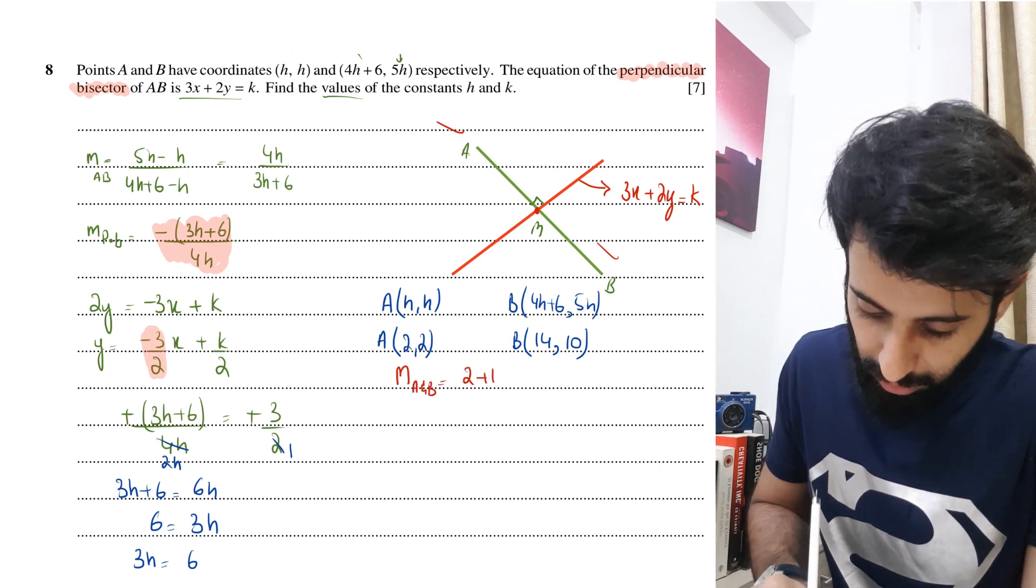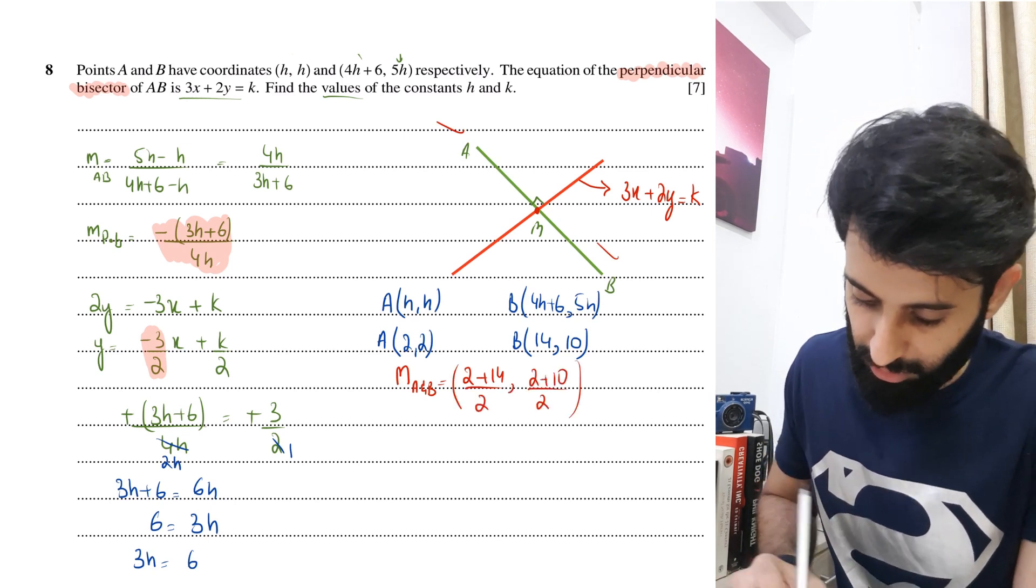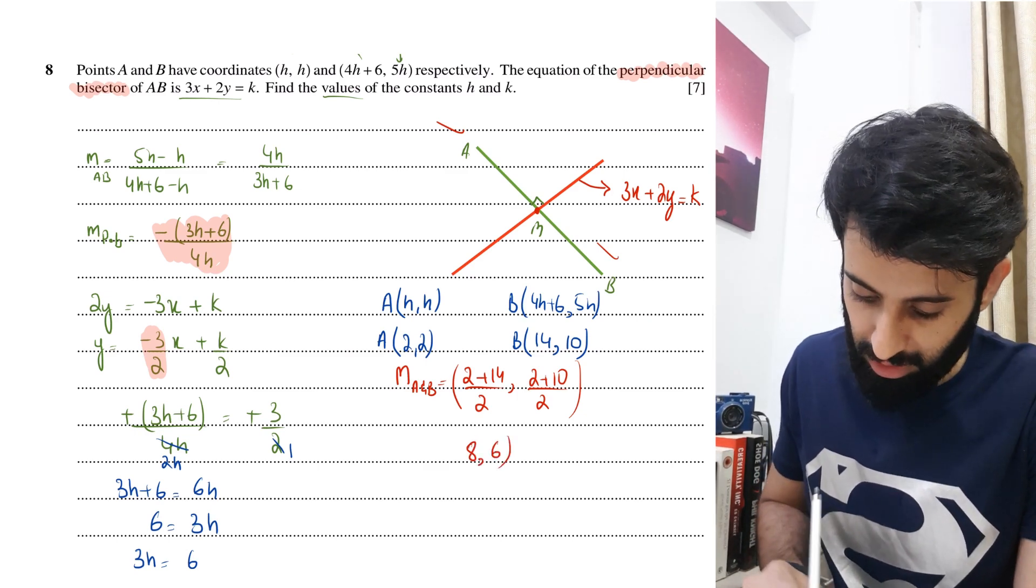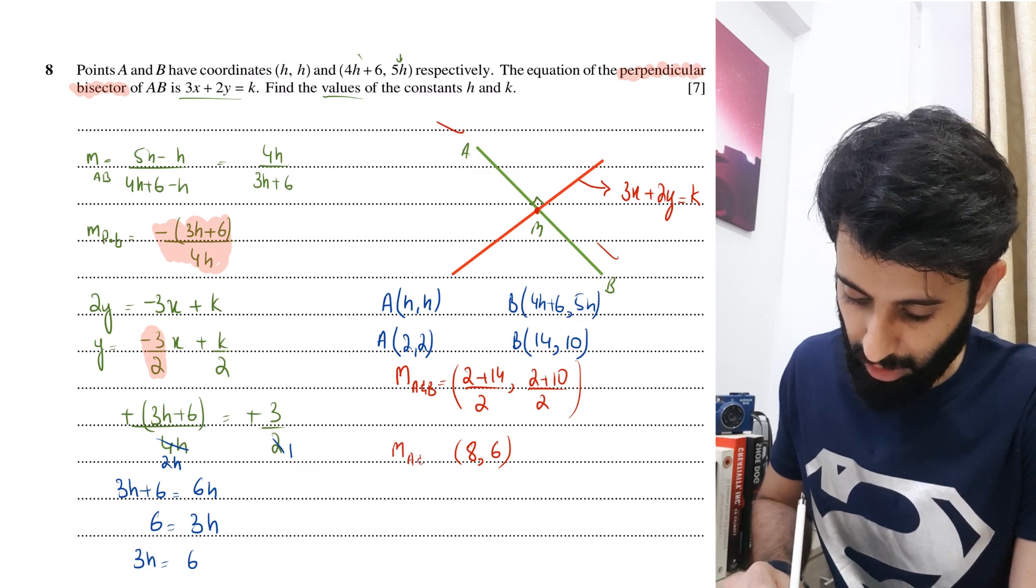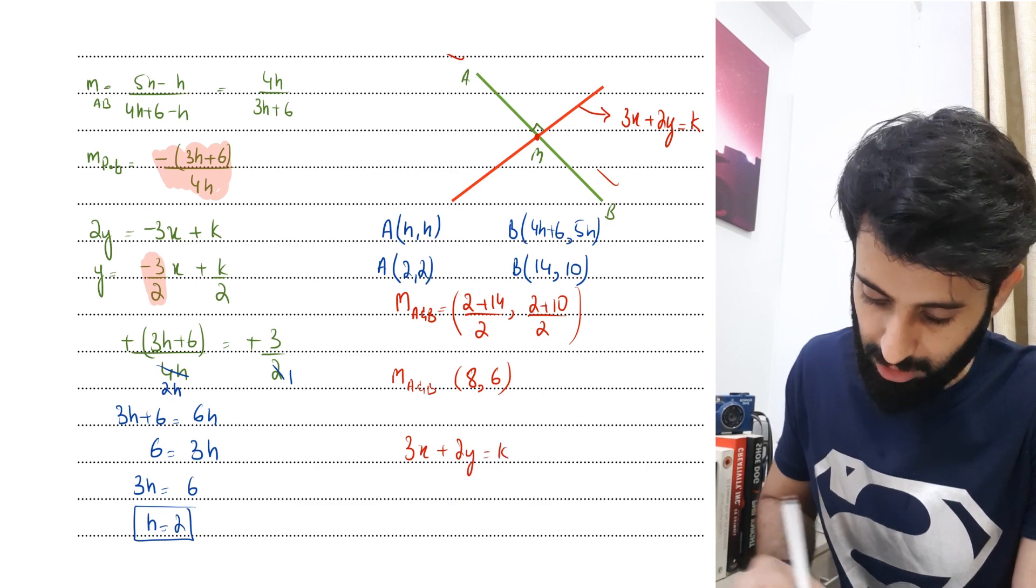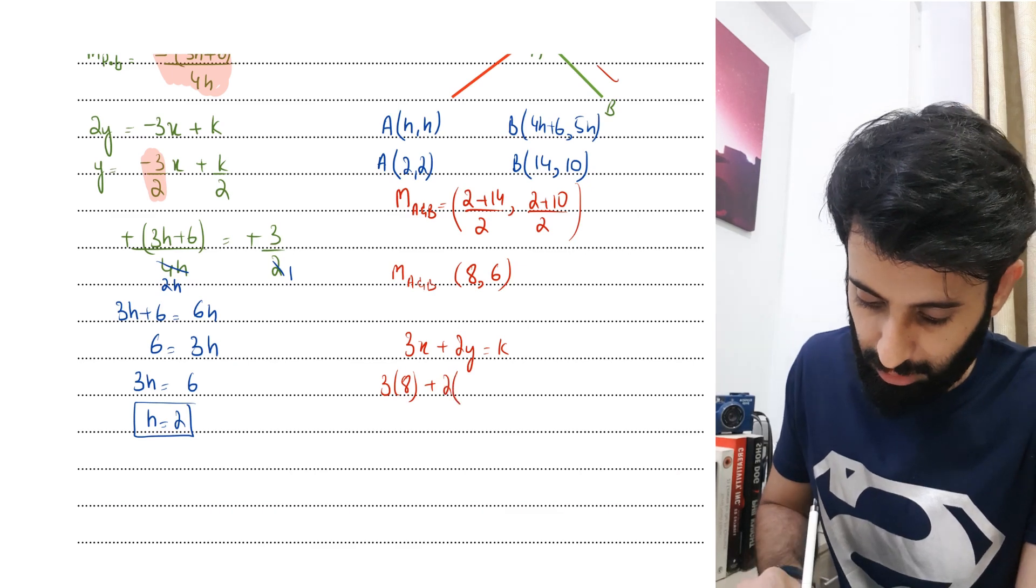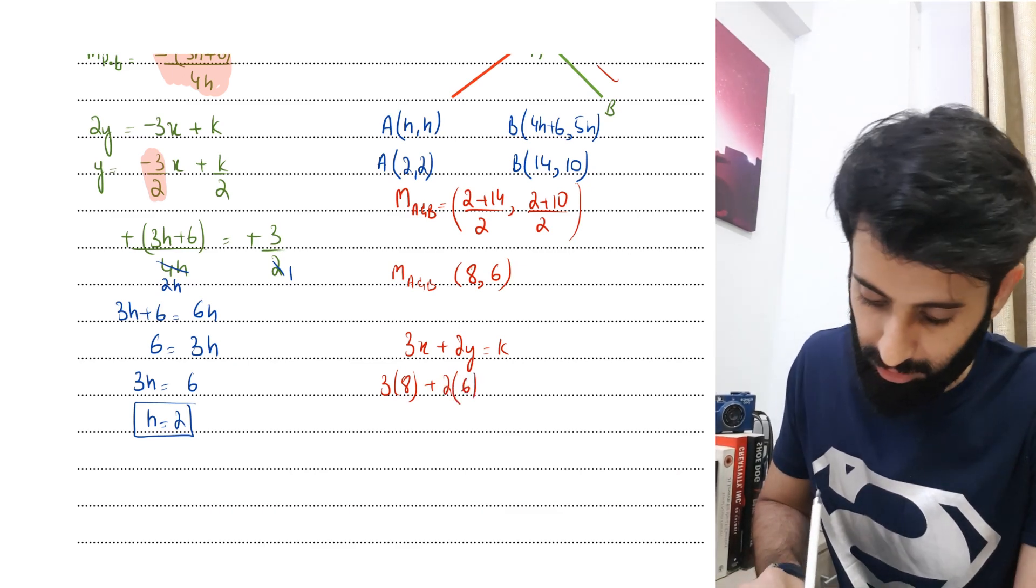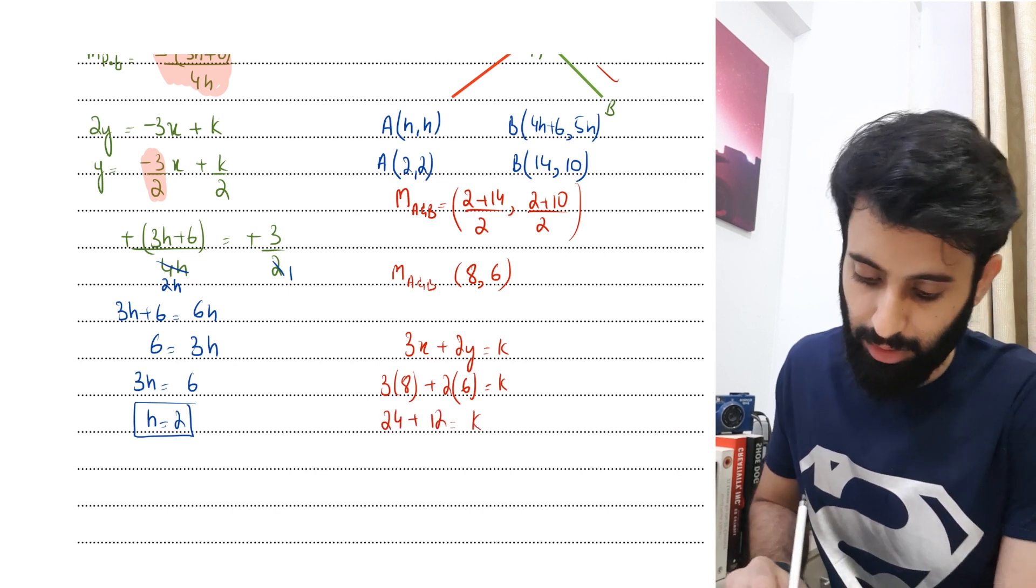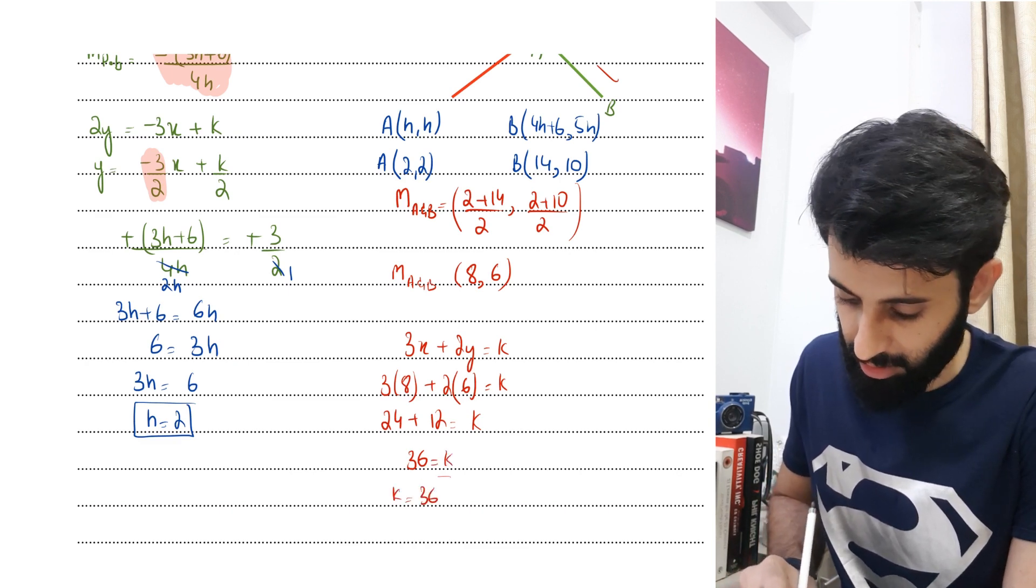In order to do that, we'll do (2 + 14)/2 comma (2 + 10)/2. So, 2 plus 14 is 16, 16 upon 2 is 8. 2 plus 10 is 12, 12 upon 2 is 6. So now we have the midpoint of A and B, that's (8, 6). The equation is 3x + 2y = k. That means I can plug in 8 in place of x and 6 in place of y. Let's write this nicely: 3(8) + 2(6) = k. 24 plus 12 equals k, so 24 plus 12 is 36 and that's what k equals. And there you go, we now have the value of h and also the value of k.